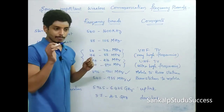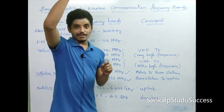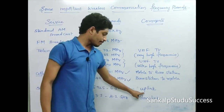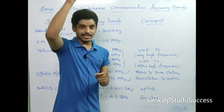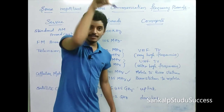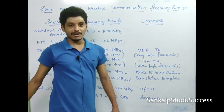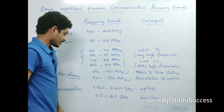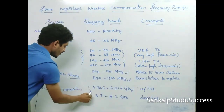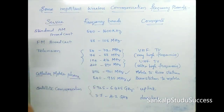Satellite communication operates in the GHz range. The uplink frequency band is 5.925 to 6.425 GHz, and the downlink is the satellite receiver band. These are the very important wireless communication frequency bands.